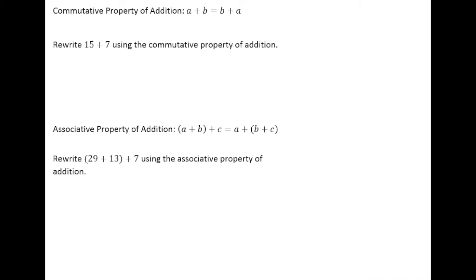In this lesson we're going to look at two important properties that addition has. The first is called the commutative property of addition. And what it says is that A plus B is equal to B plus A.